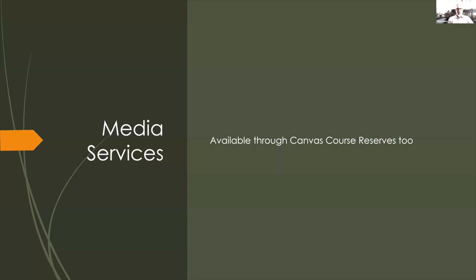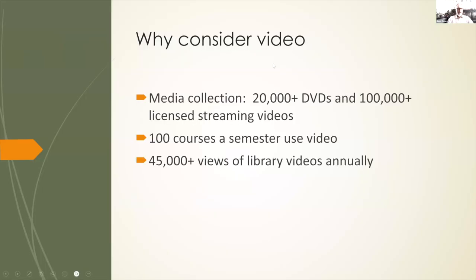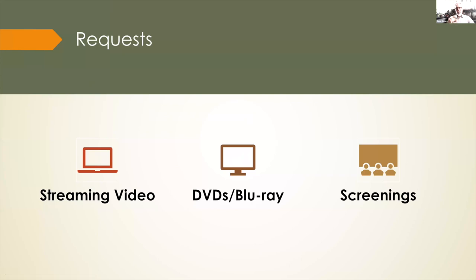Donna showed you the media request button within course reserves. These are the kinds of requests you can make. If you want your students to watch a streaming video, you can make that request through course reserves. The advantage is your students can find it with your course — they don't have to go to the library catalog or hunt for it elsewhere. It's right there with all your other readings, simple for them to find.